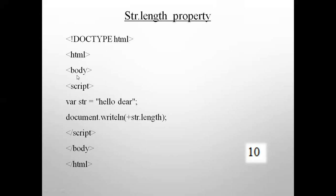Let's see a program for this. Starting normally with doctype HTML through to body and script tag with language equal to JavaScript. I have taken a variable `str` declared here. For example, `var string = 'hello'` — close the double quotes — and then `document.writeln` plus `string.length`. This is the way to write it to display the answer; it will give the answer as 5.